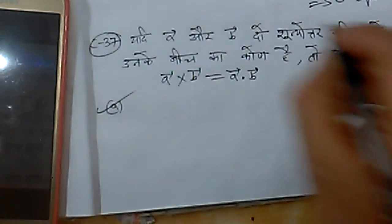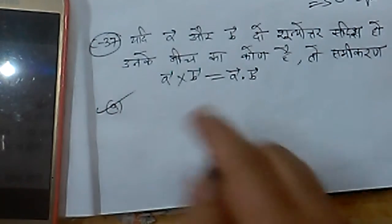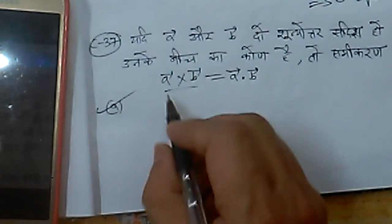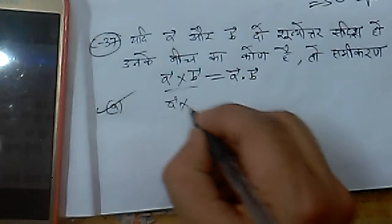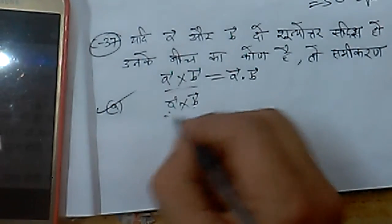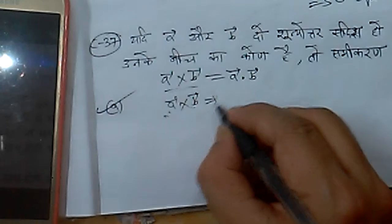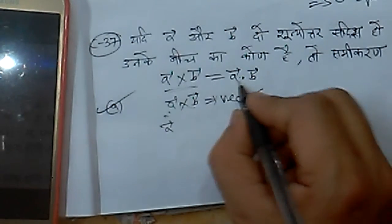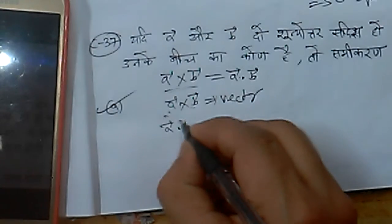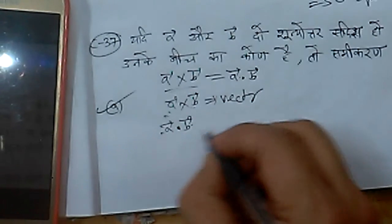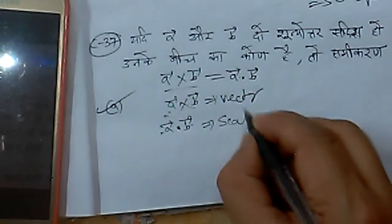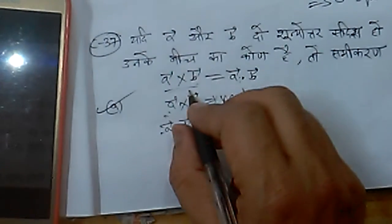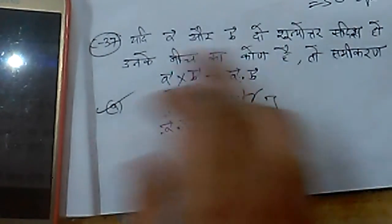Yes, this option is correct — this equation can never be true. Because on the left-hand side, the value given is A cross B, which is the cross product of two vectors, so we get a vector quantity. And on the right-hand side, A dot B is the dot product of two vectors, so we get a scalar quantity. A vector quantity can never be equal to a scalar quantity.